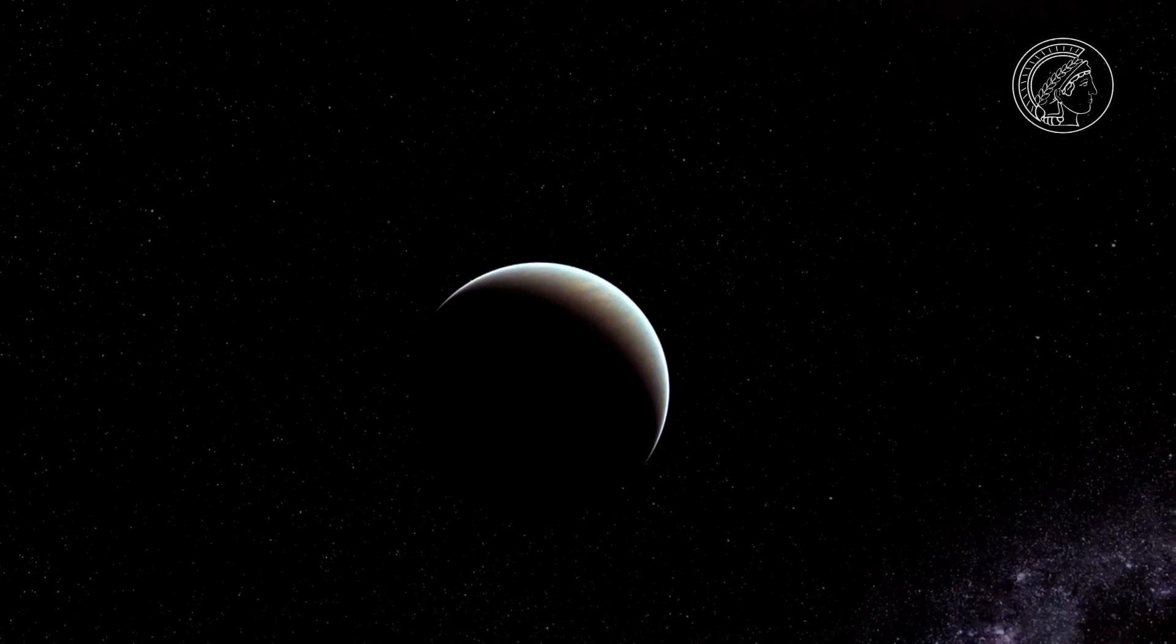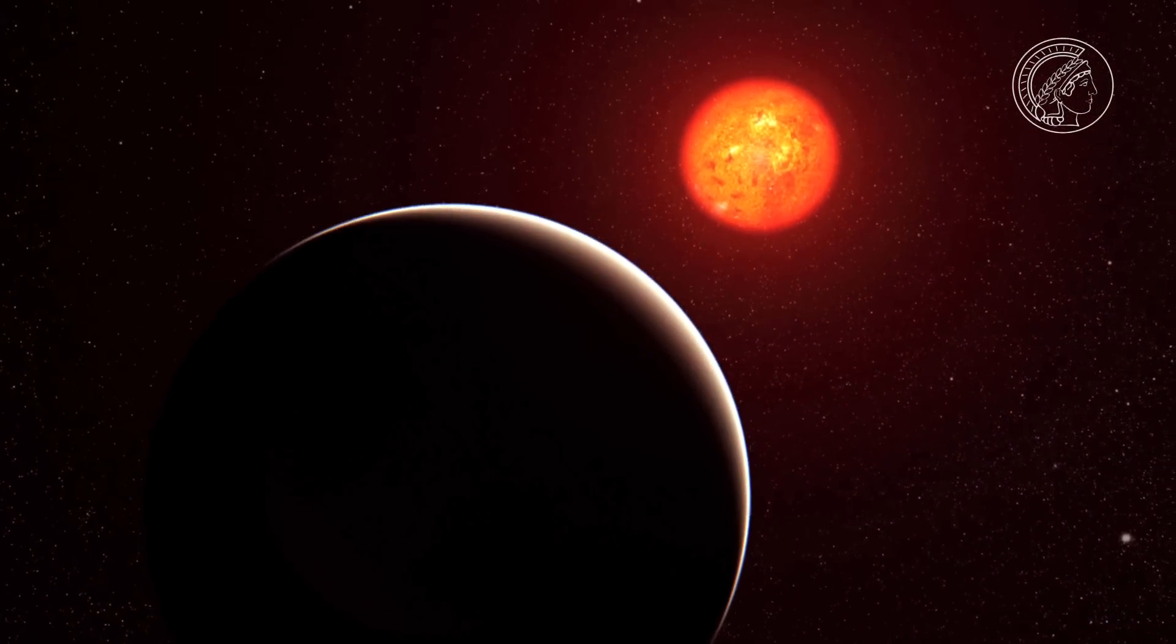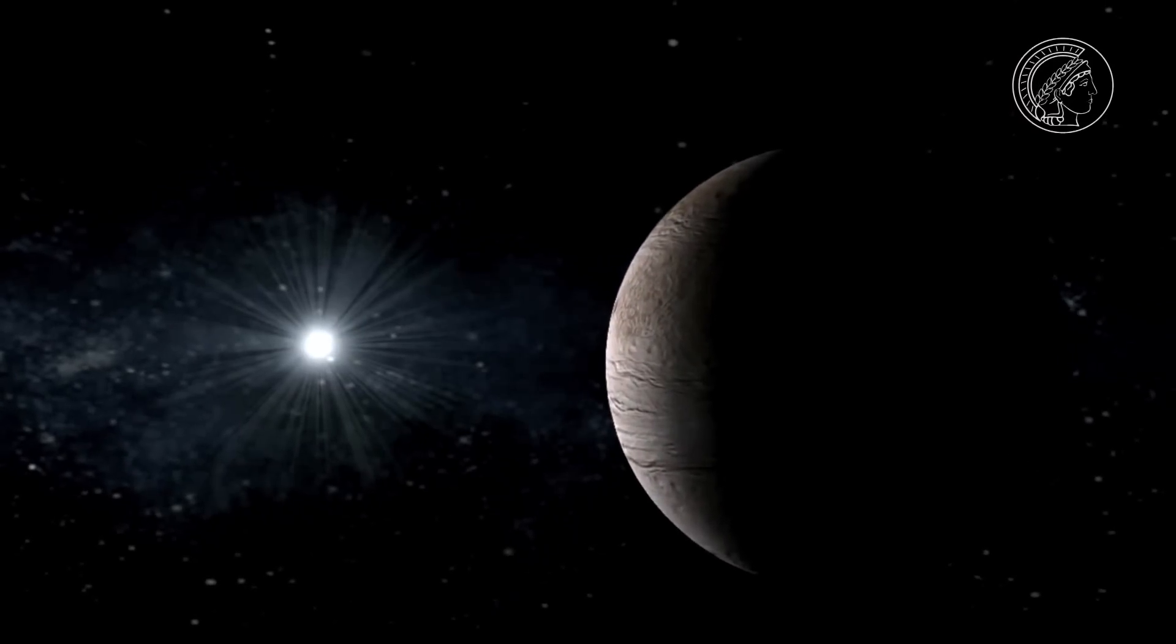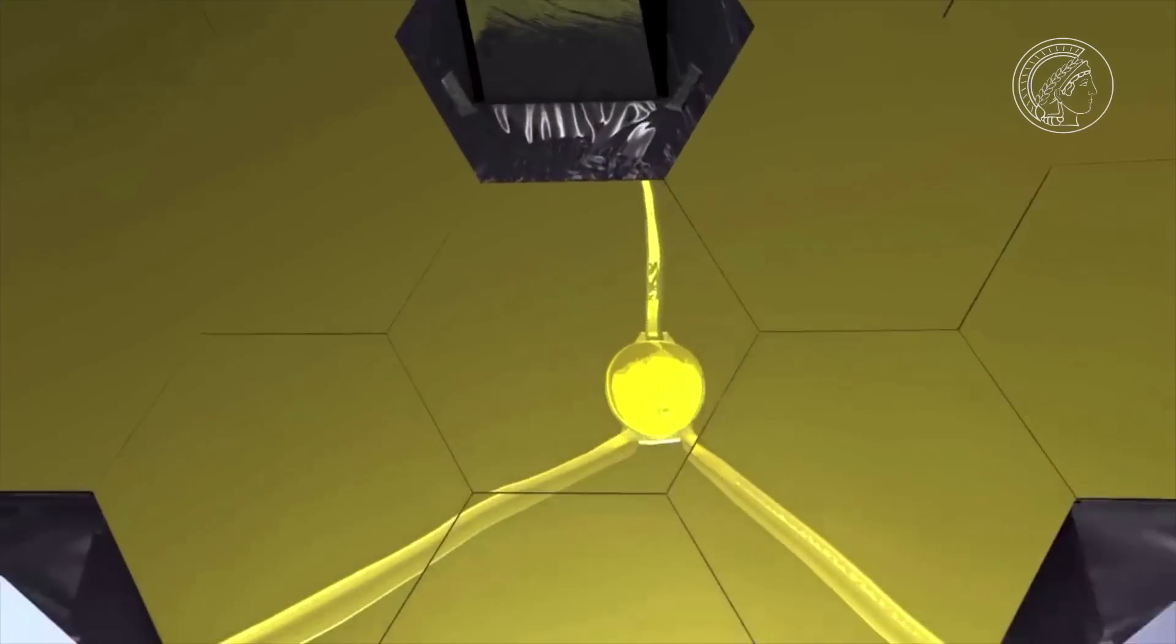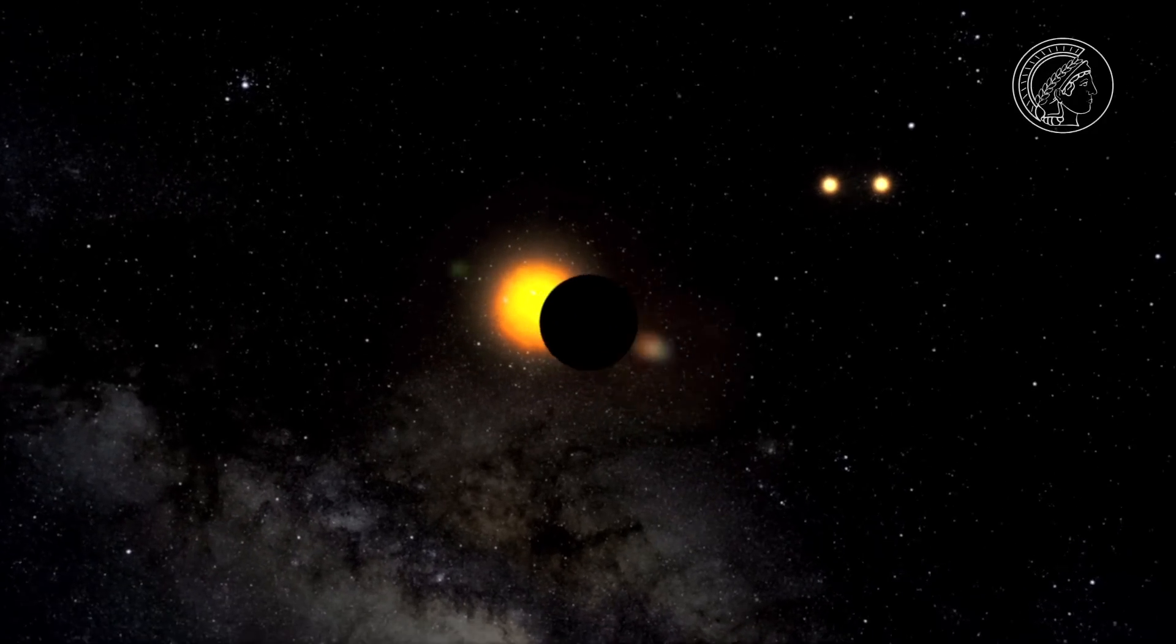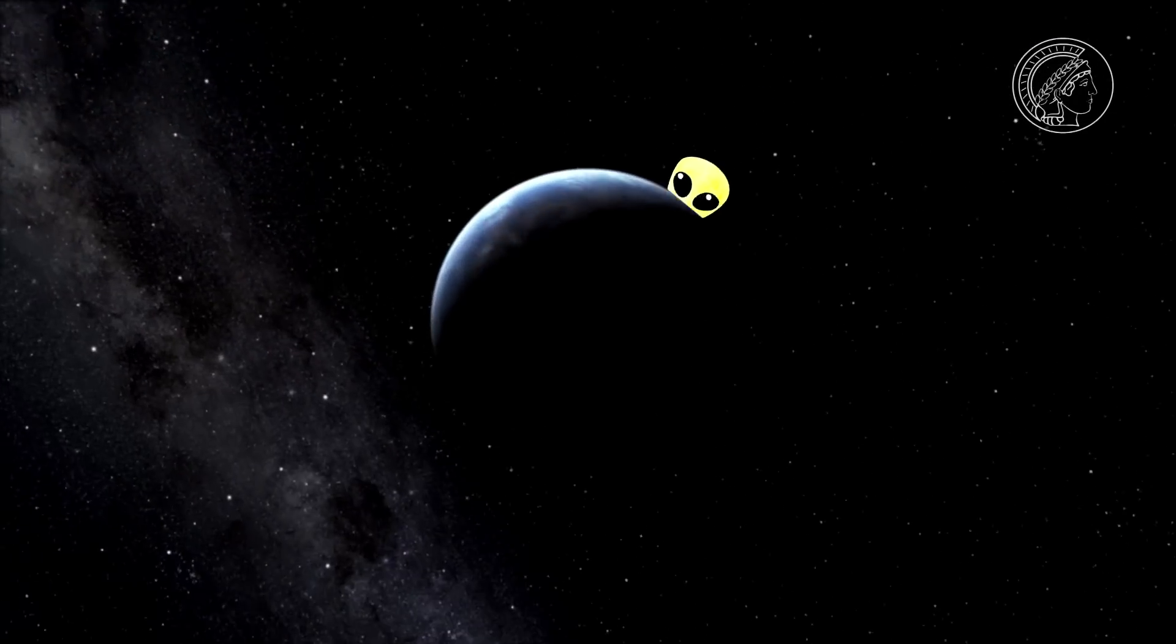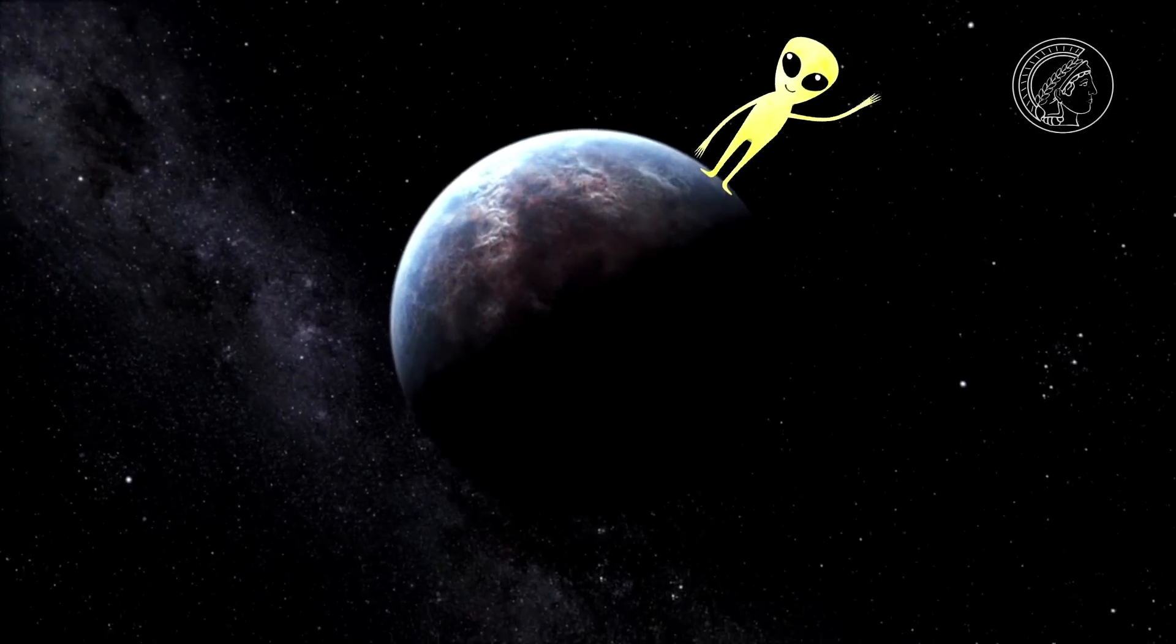We know of almost 1800 exoplanets so far. When the new James Webb Space Telescope starts operating in space in a few years time, the Heidelberg scientists will receive the real data from space that they so badly need. If in a measured spectrum we find oxygen, water, and methane together, we know that on this other planet there could also be life like ours. And that would be the sensation of the millennium.